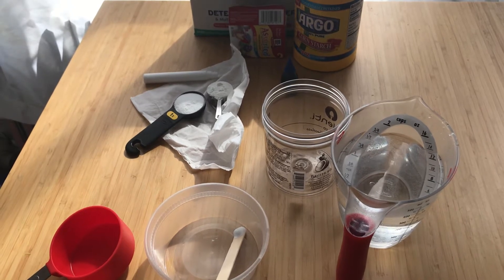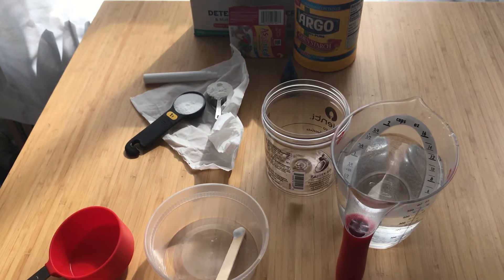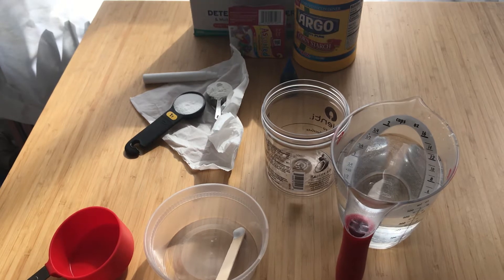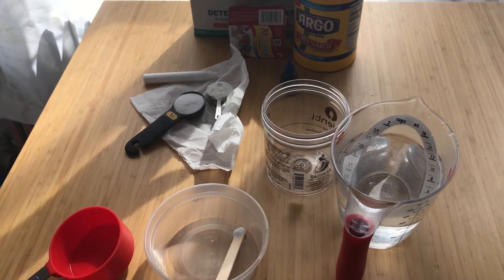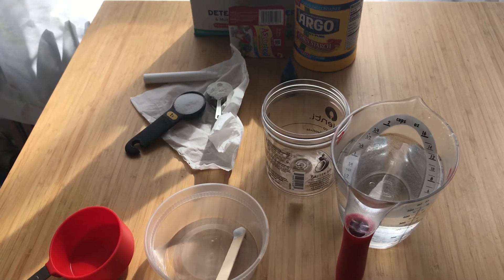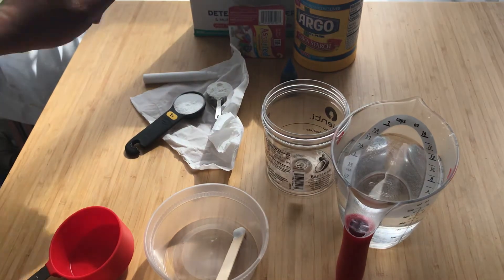Today I'm going to show you how to make your own bouncy ball. The ingredients you're going to need are borax, which you can find in the laundry detergent section of your grocery store,